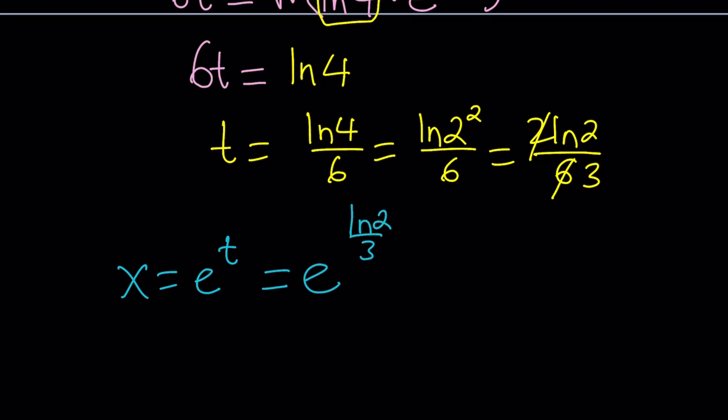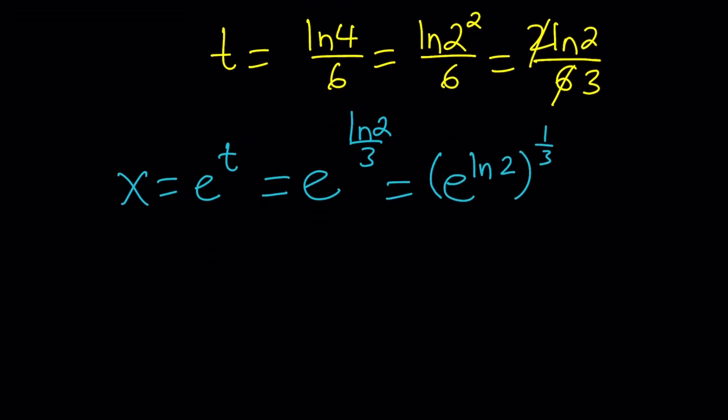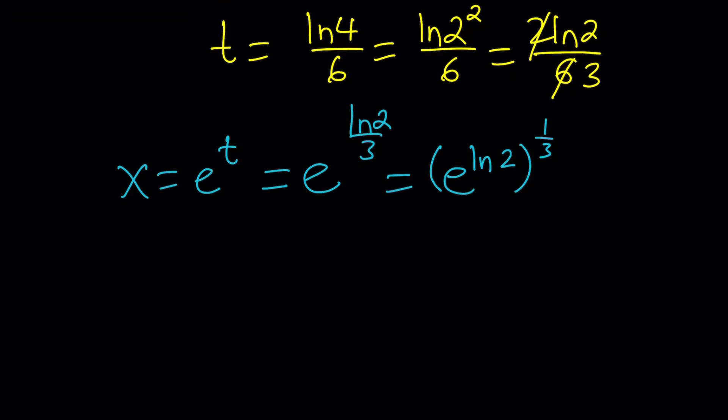But can we simplify it? Absolutely. We can, first of all, write this as e to the power ln 2 to the power 1 third, because exponents are multiplied. Using properties of exponents. And then, think about the meaning of e to the power ln x. It's X, right? So, e to the power ln 2 would be 2, just 2. And this would be 2 to the power 1 third. So, X is equal to 2 to the power 1 third, which can also be written as the cube root of 2.